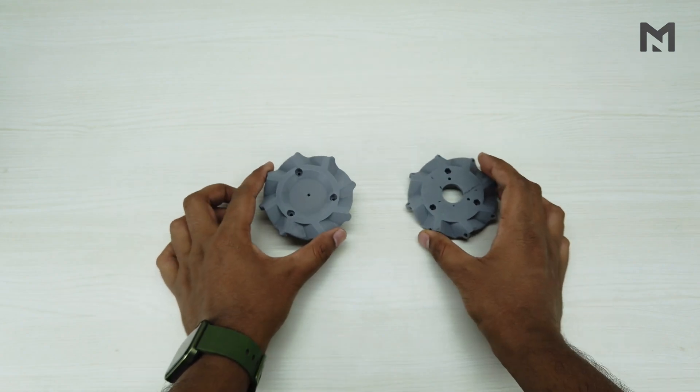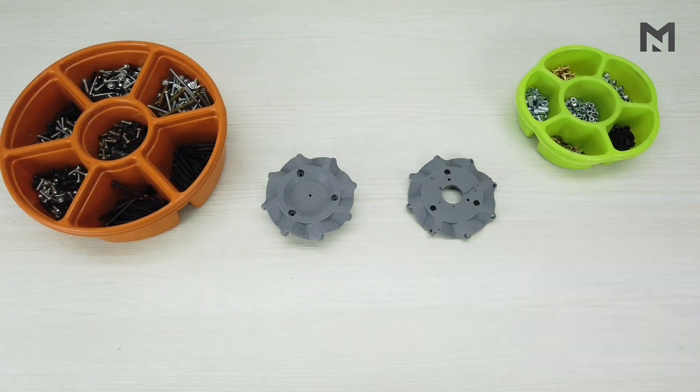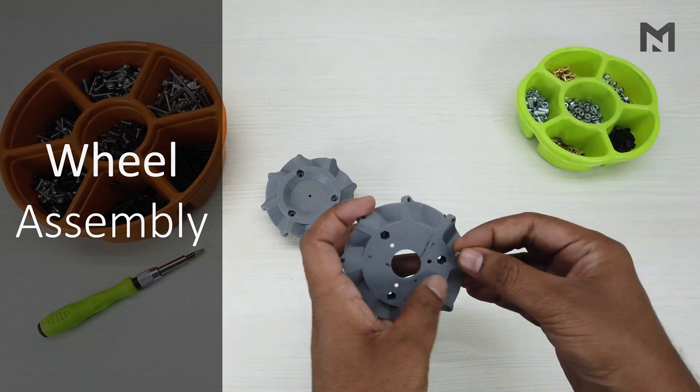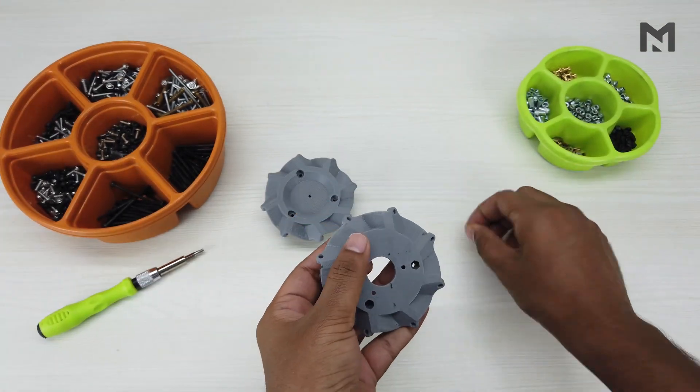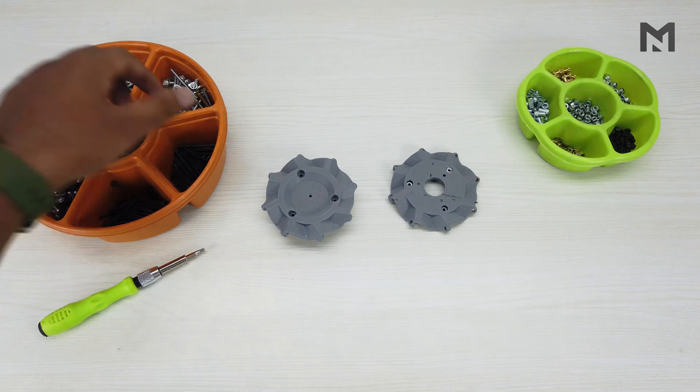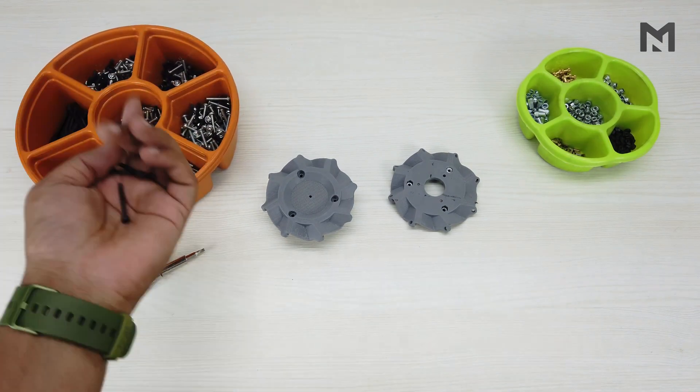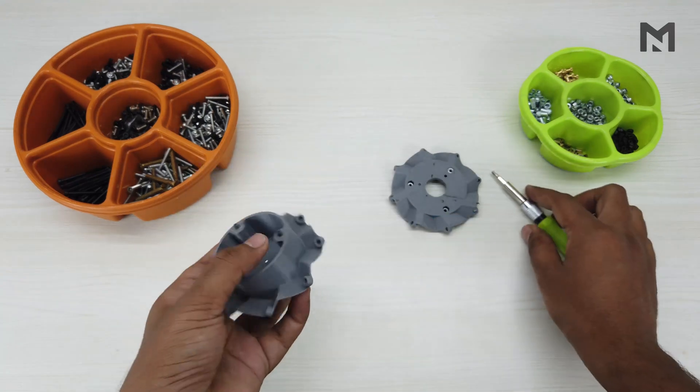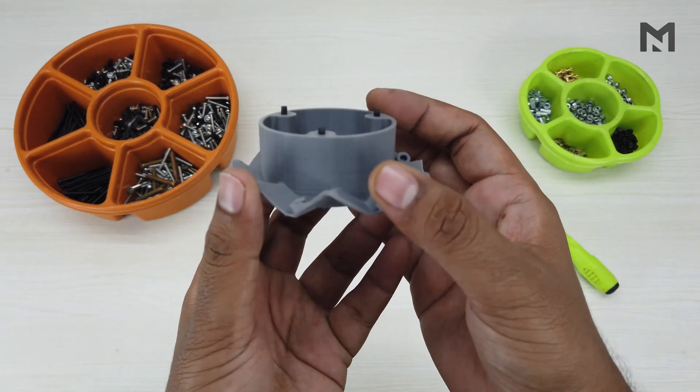To assemble them, I will use M3 size bolts and nuts. First insert the 3 nuts in the bottom part. I have designed grooves for it. Then we have to take 3 screws of 30mm length to attach both the parts. After attaching the screws, it will look like this.